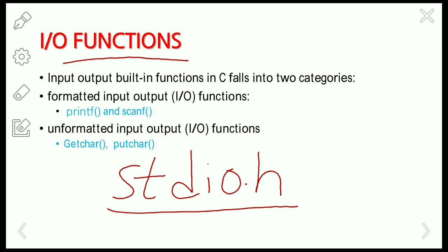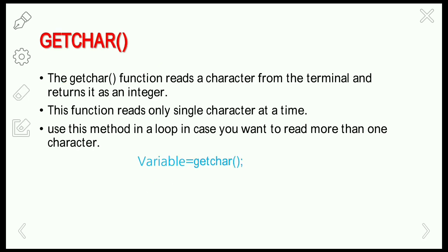Input/output built-in functions in C fall into two categories: formatted and unformatted input/output functions. The name itself tells us that 'formatted' means we are using some format specifier in the function, whereas in unformatted functions we are not using any format specifiers — it simply reads a character from the user and displays it on the screen.